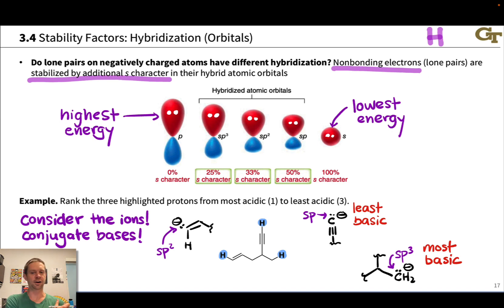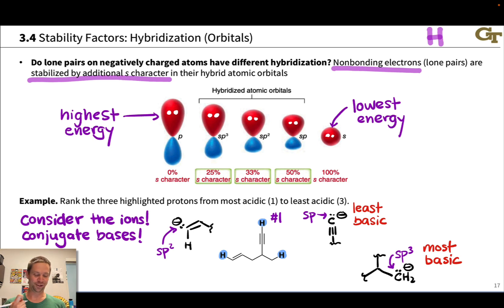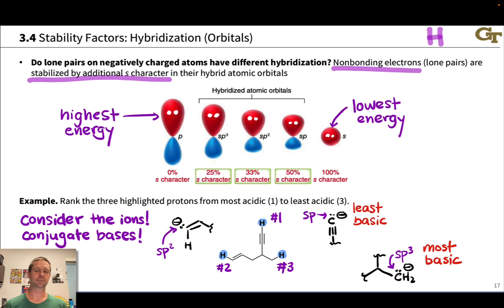Applying the conjugate seesaw: because the sp alkynyl anion is the least basic conjugate base, the alkyne C–H (the C≡C–H) will be the most acidic, followed by the alkenyl C–H connected to the sp²-hybridized carbon, followed by the sp³ C–H. This acidity difference, which is quite large, is entirely coming from the difference in hybridization of the lone pair that appears in the conjugate base.